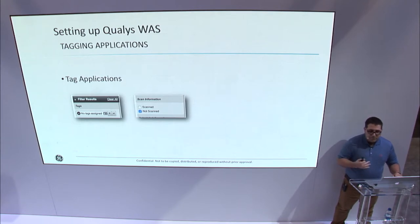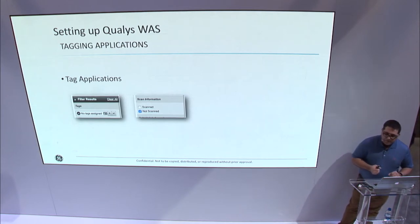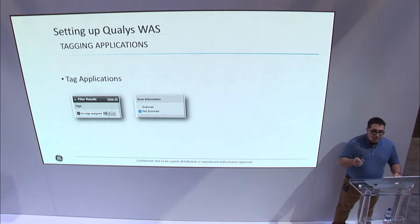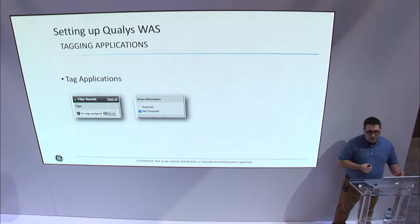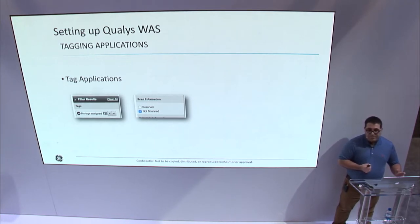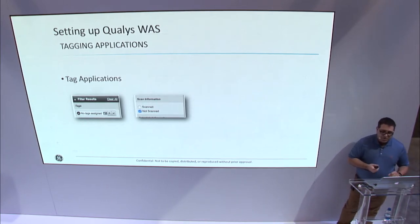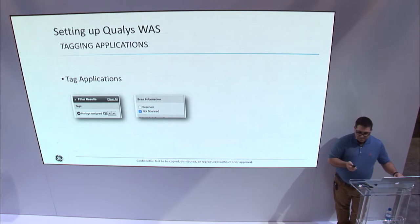We repeat this cycle for all of our customers, and once complete, we can leverage the Qualys WAAS user interface to schedule our scans, reports, and so on. There is also a Qualys API that can be leveraged to further automate this process, but for a program looking to quickly onboard with limited resources, it's fairly easy to proceed manually using the user interface until you're able to build in the necessary automation.